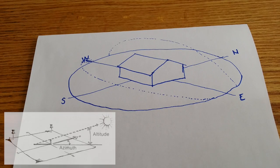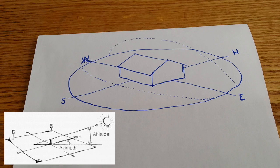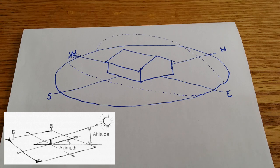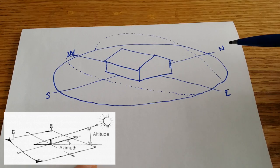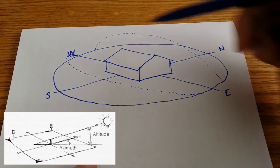When you're thinking about the sun the things to consider are the azimuth and the altitude. The azimuth being the horizontal angle in the sky versus the altitude which is the vertical angle in the sky.